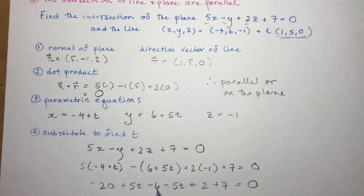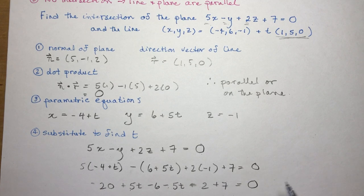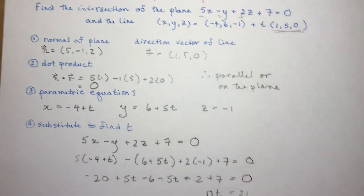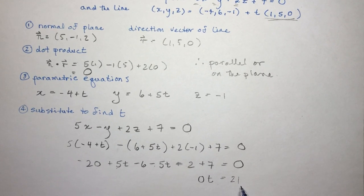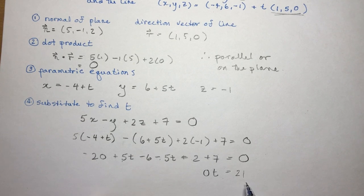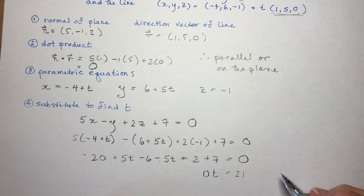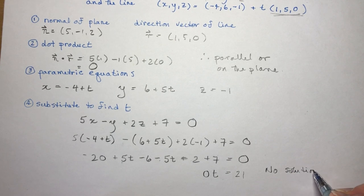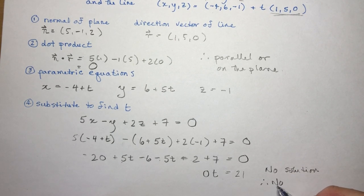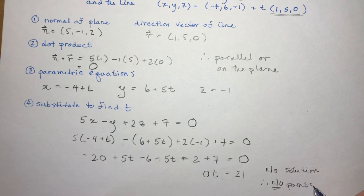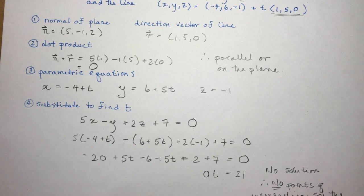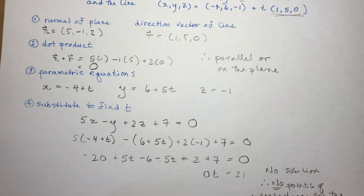Looking at the constants: minus 20 minus 6 minus 2 plus 7 gives minus 21. So 0t equals negative 21, which means 0 times what number gives me 21? There is no solution. No solution means there are no points of intersection, and the line is parallel to the plane.